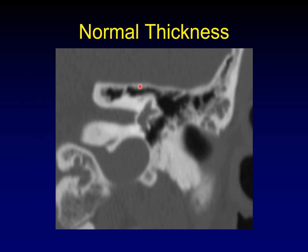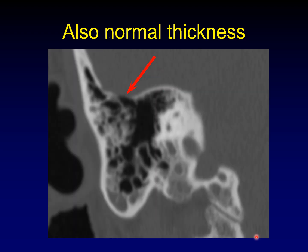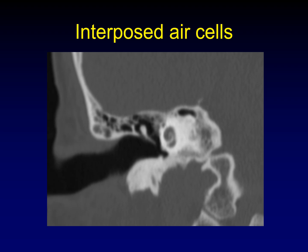This is what I would consider the normal thickness of the tegman — maybe one to two millimeters, fairly uniform. This is some thinning that you can barely see on CT; this is still acceptable — there's no fluid leak, no depression of the dura. Here's a situation where air cells are interposed between the tympanic cavity and the tegman, which adds extra protection; this patient is less likely to run into trouble with their tegman.